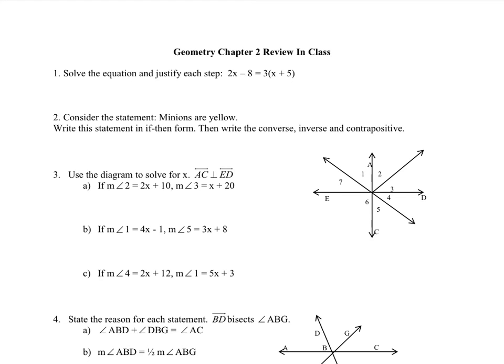Okay, here we go. This is the chapter 2 in-class review. For the first question, it asks us to solve the equation and justify each step. So this is the algebraic proof that I talked about. Here's the example of it.